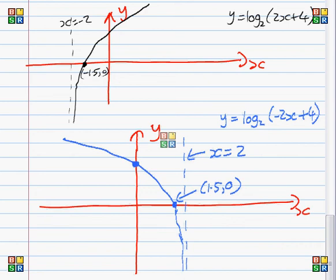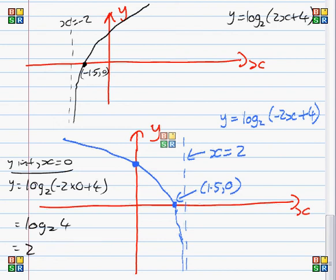And of course we need to find the y intercept. To find a y intercept we let x equal 0. So in other words, y is log to the base 2 minus 2 times 0 plus 4, which is log to the base 2 of 4, which is 2. So our y intercept is (0,2) and that's it. That's our final answer. Y equals log to the base 2 of minus 2x plus 4.